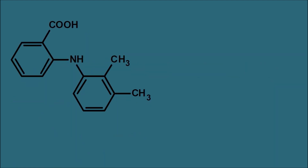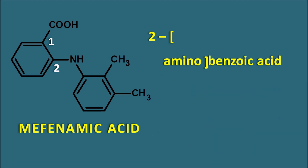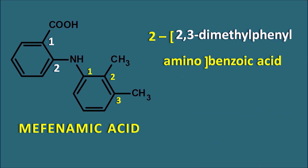The next class is the fenamate derivatives. One such drug is mefenamic acid. Mefenamic acid has a phenyl group with carboxylic acid at the first position and an amino group at the second position — it is an anthranilic acid derivative. So it starts as 2-aminobenzoic acid, which is anthranilic acid. The amine group bears a further side chain — a 2,3-dimethylphenyl group at the nitrogen. So 2-(2,3-dimethylphenylamino)benzoic acid is nothing but mefenamic acid.